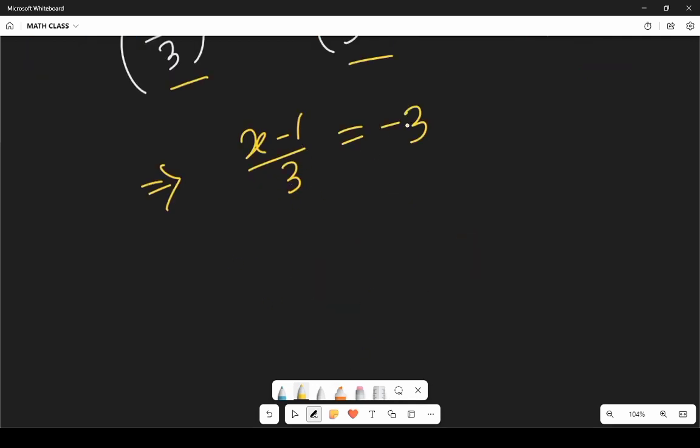So now we can cross multiply it so it will be x minus 1 equals to minus 9 and in the next step x equals to minus 9 plus 1 which gives us minus 8.